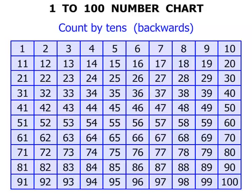We might not start at 100. We might start at 83. Again counting by tens backwards: 83, 73, 63, 53, 43, 33, 23, 13, and finally 3 on the number chart there.